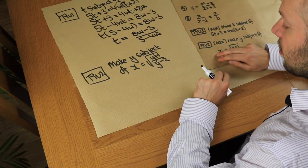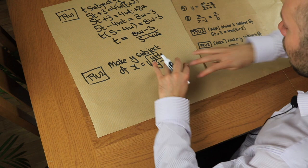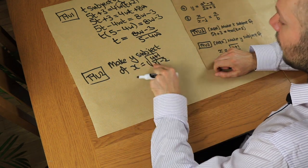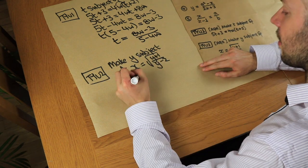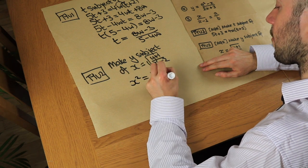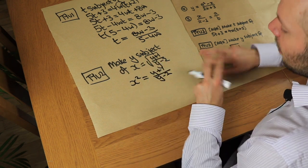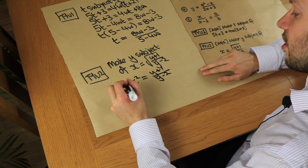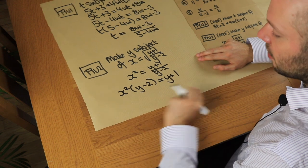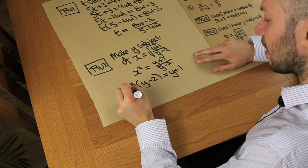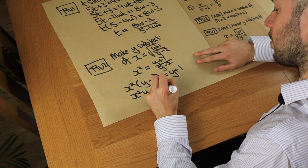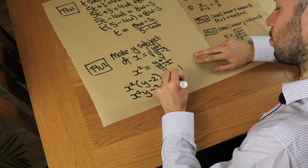For the second, harder question: make y the subject of x equals the square root of (y plus 1) over (y minus 2). First we want to free up all the y terms. We square both sides to remove the square root: x² equals (y plus 1) over (y minus 2). y is still trapped inside a fraction, so we multiply both sides by (y minus 2). Then we expand the bracket: x²y minus 2x² equals y plus 1.